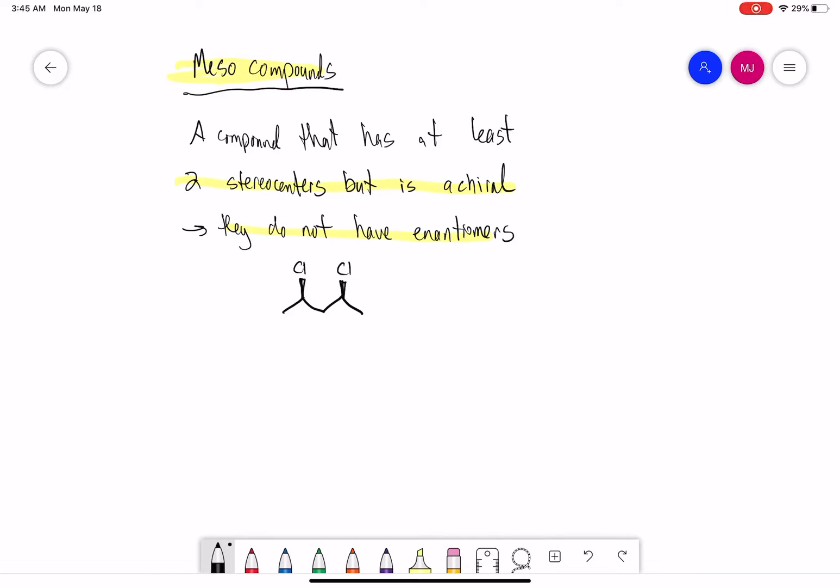This is an example of a meso compound. It has two stereocenters—that's a stereocenter and that's a stereocenter—but you see that the molecule has an internal plane of symmetry. The left side and the right side are symmetric. These compounds are meso compounds; they are achiral.